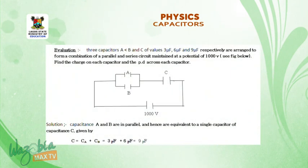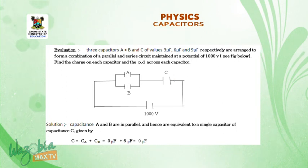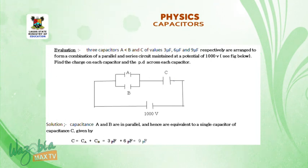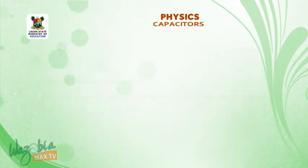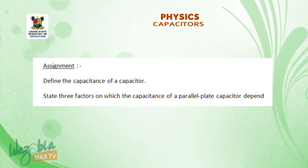Under the evaluation, go through the diagram and you will find it asks you about C total. Determine those in parallel first, get the answer, then use it with the one in series to get C total, and then use that to calculate what is required. Assignment: define the capacitance of a capacitor. State the factors on which the capacitance of a parallel plate capacitor depends. Thank you. Have a blessed day.